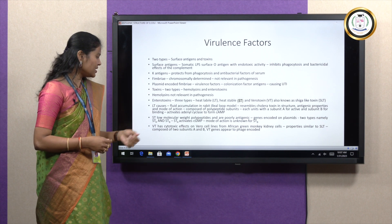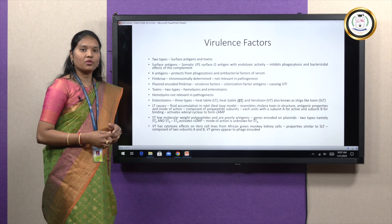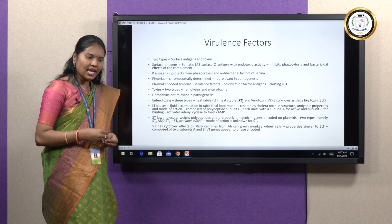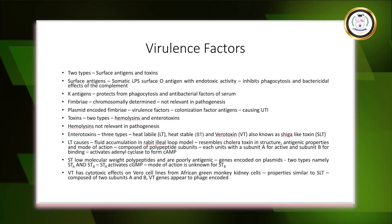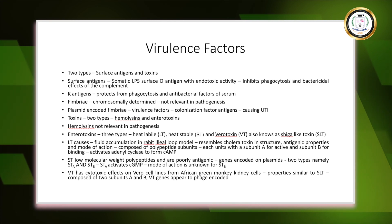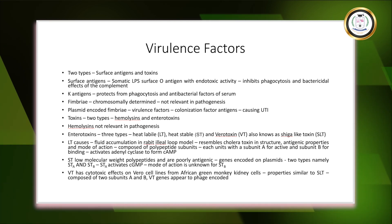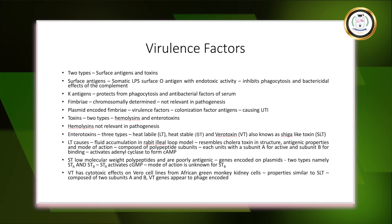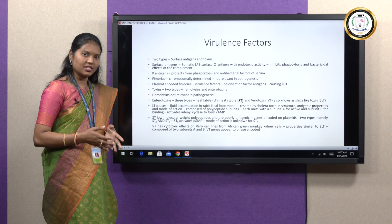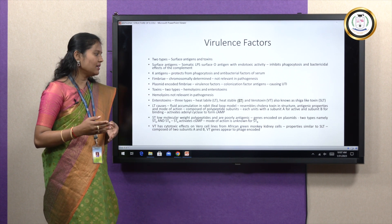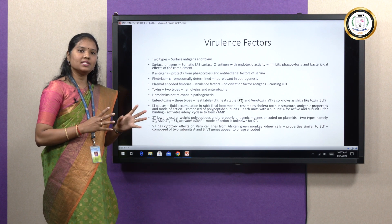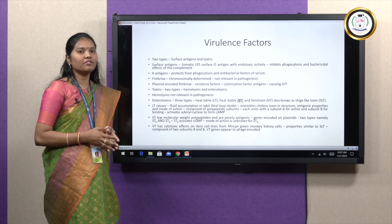The last enterotoxin is Verotoxin or VT toxin. It got its name because it has a special affinity towards Vero cells — special cell lines obtained from African green monkey kidney cells. This toxin has properties similar to Shiga-like toxin (SLT), and it is composed of two subunits, A and B. The toxin is completely phage encoded.